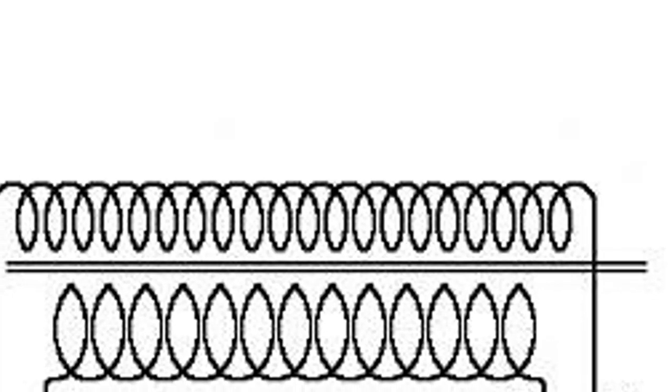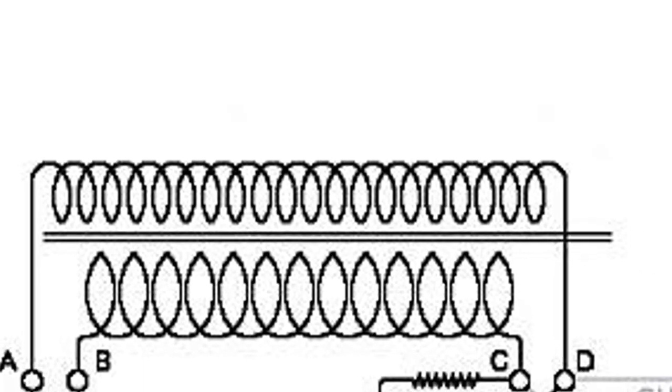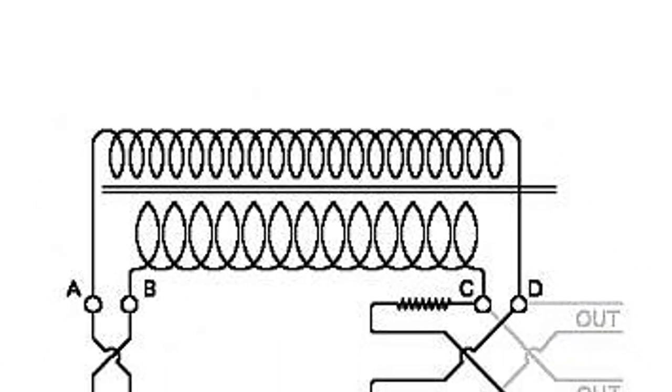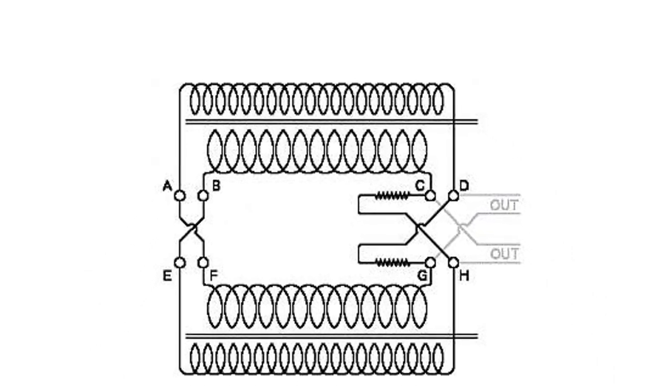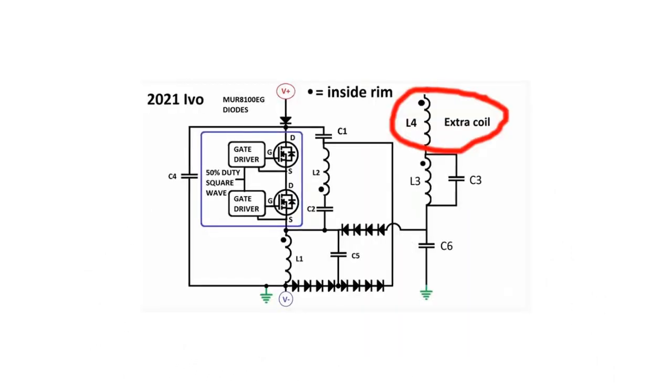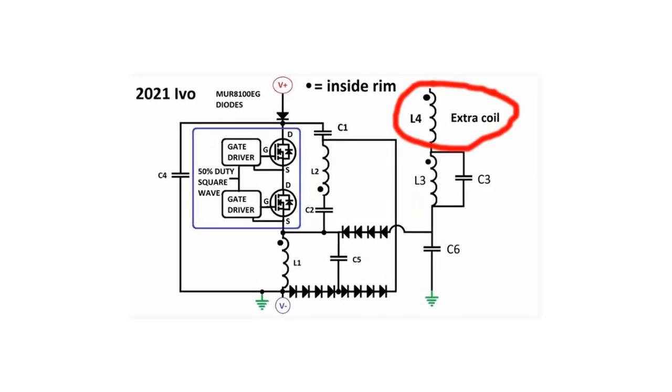The current passing through the primary coil of the Tesla coil creates an oscillating magnetic field. This oscillating magnetic field induces a current in the secondary coil of the Tesla coil. The current in the secondary coil creates a high-voltage, low-current spark discharge.